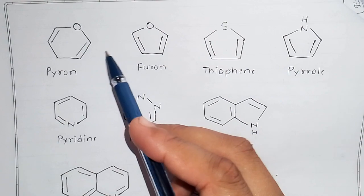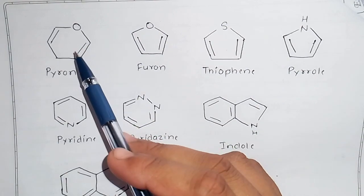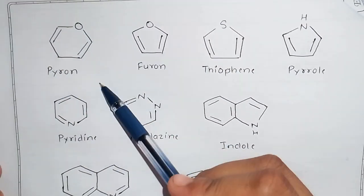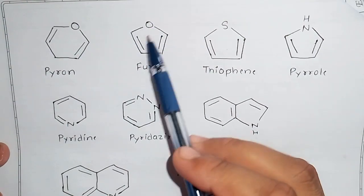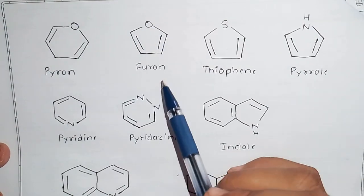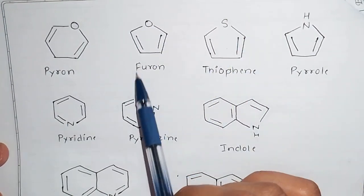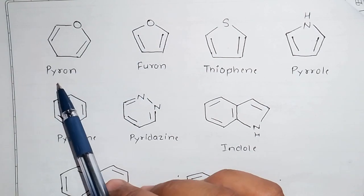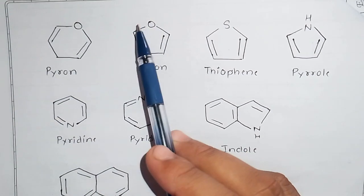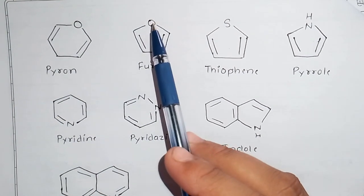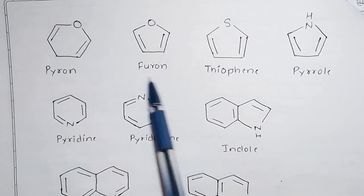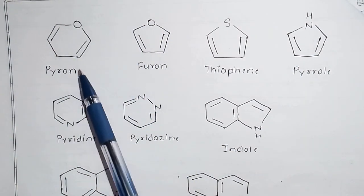Here we have a six-membered ring with oxygen present — we call it pyran. And if you have a five-membered ring with oxygen present, it is called furan. Pyran and furan have slightly different names because we generally represent oxygen differently, but here we specifically use these common names.